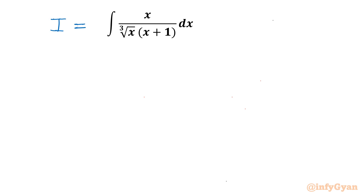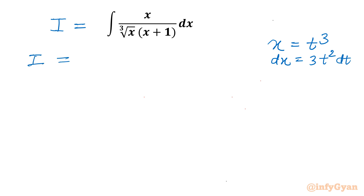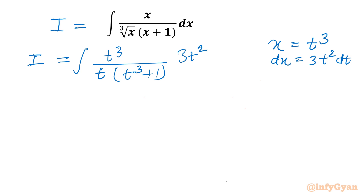I will use substitution. I can see the cube root is in the denominator, so I can write x equal to t cubed. So dx will be equal to 3t squared dt. So I equals the integration: in place of x we have t cubed, cube root of x is t, times (t cubed plus 1), and dx is 3t squared dt.